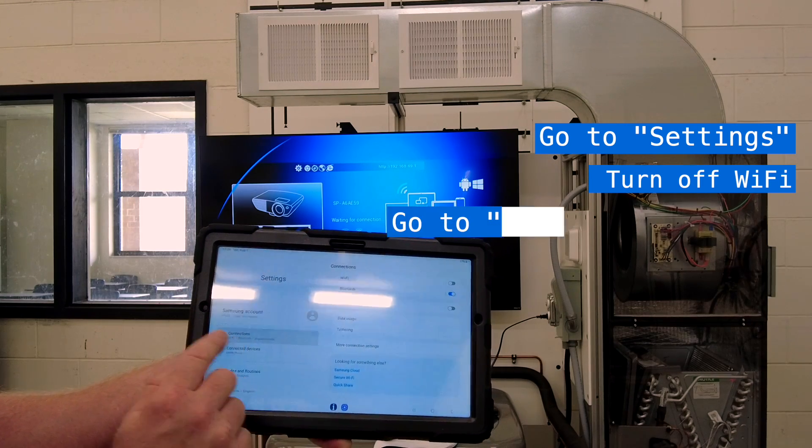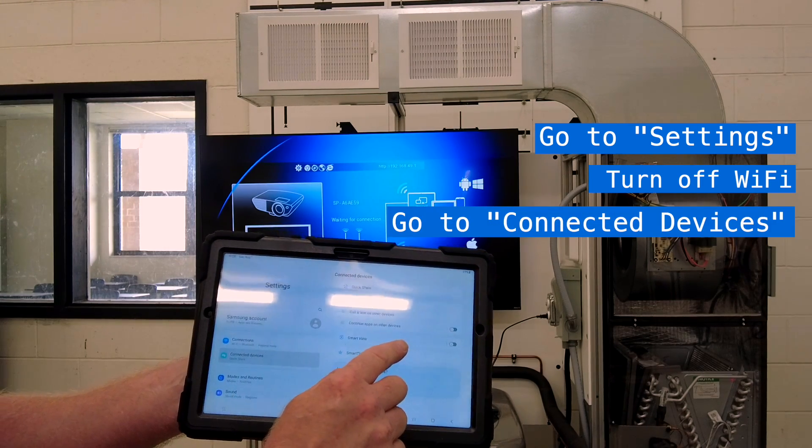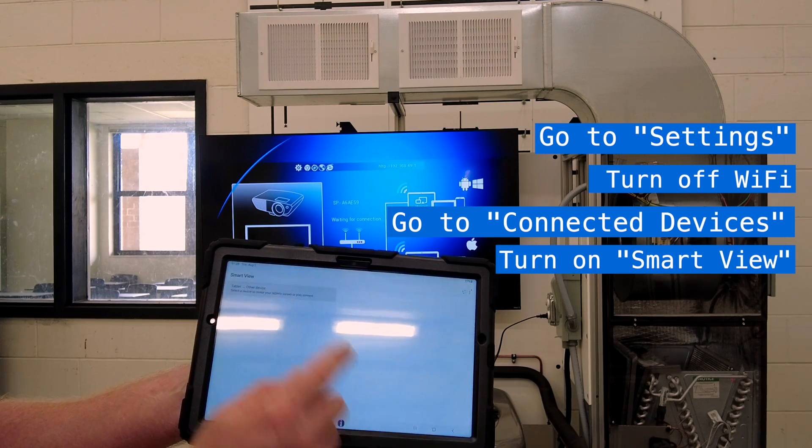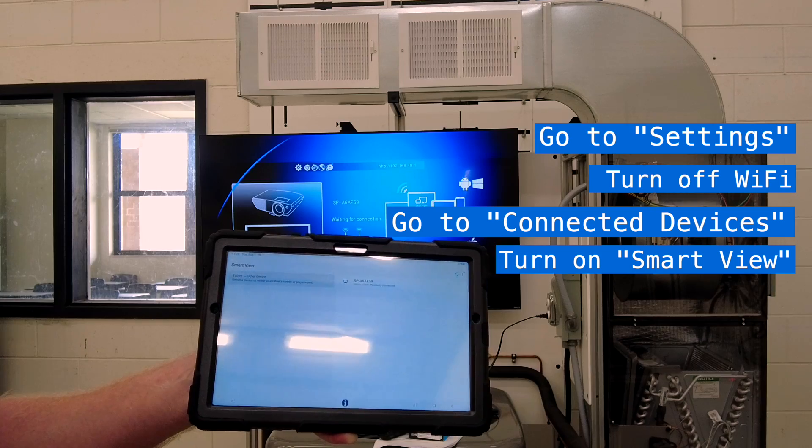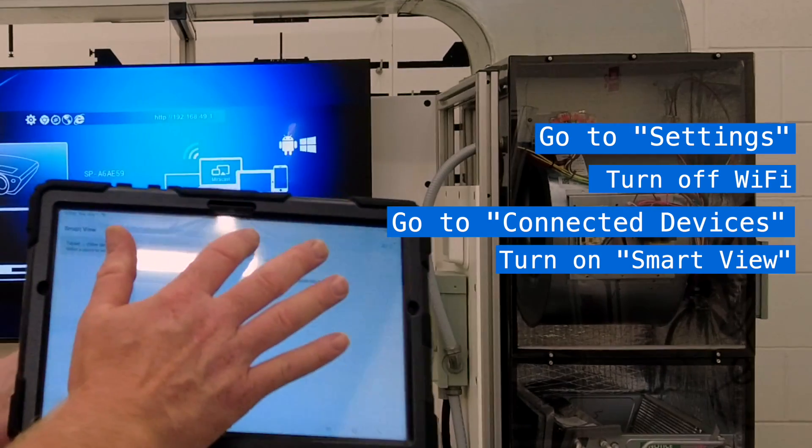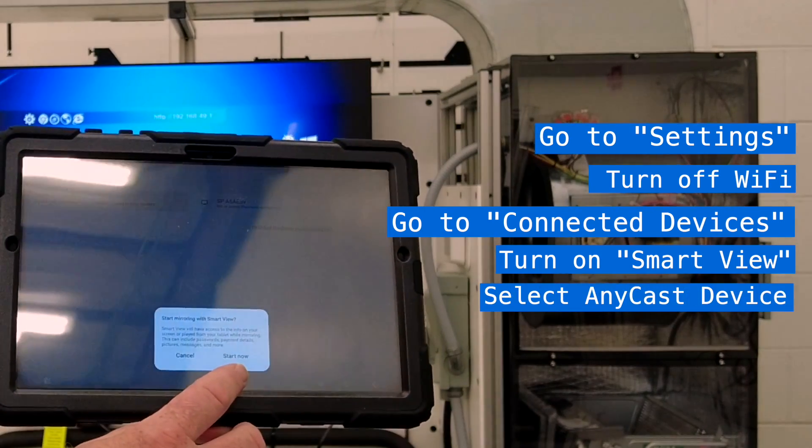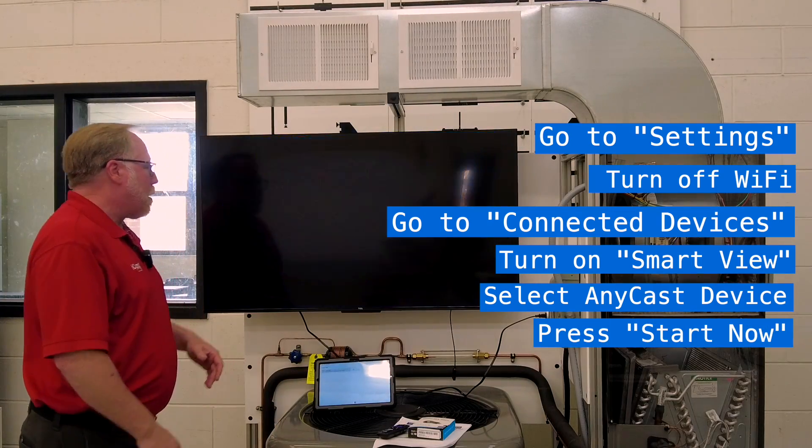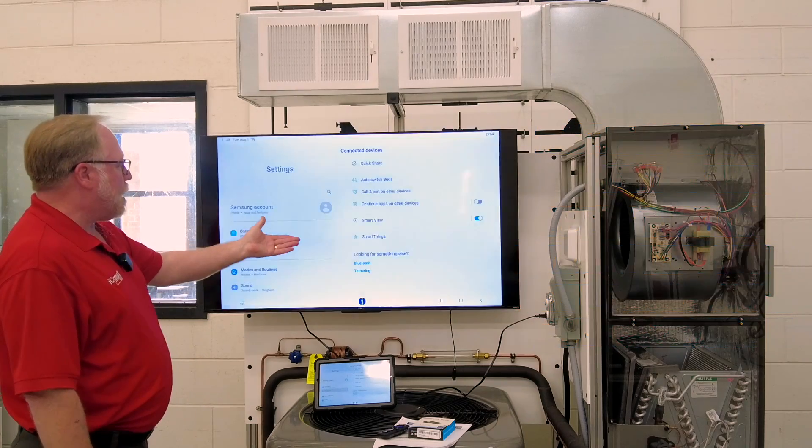Okay, so connections, Wi-Fi is off. Then you're going to go to connected devices. You're going to make sure your smart view is on, and then it's going to look for the Anycast device. You're going to choose it, and then it's going to say start now. You click start now. It may connect to it right away, in this case it did.